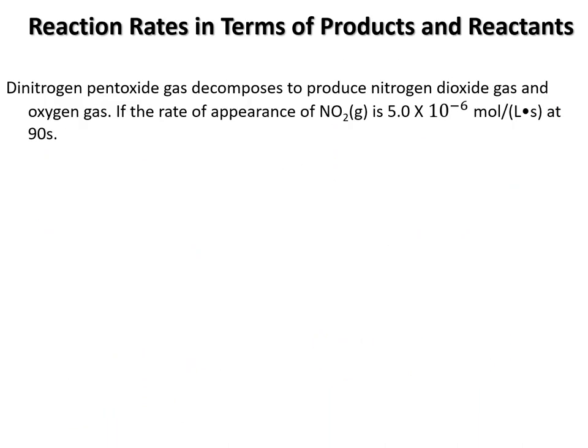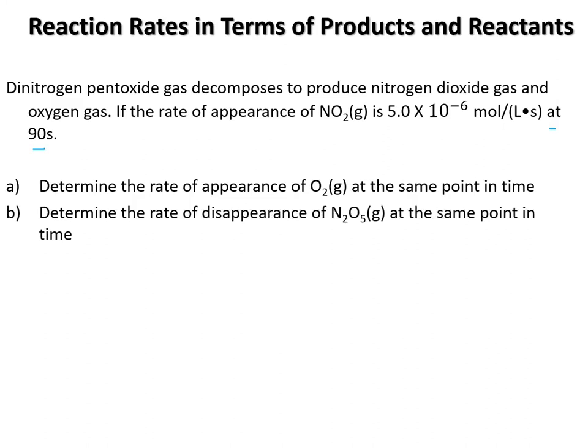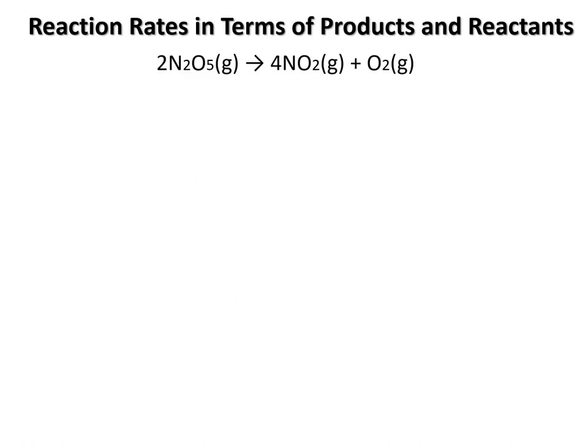And those are the two we were talking about. So here's finally a question based on the same equation. And it is saying at 90 seconds. Now the 90 seconds is kind of redundant information, because we're just looking at the rates at that 90 seconds. So firstly, we want to determine the rate of the appearance of O2. And we want to determine the rate of disappearance of the N2O5. So we can use those rates that we just came up with in the previous question. There's our balanced equation.